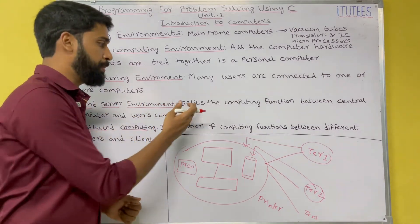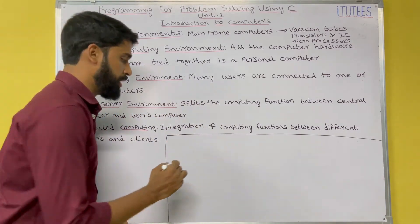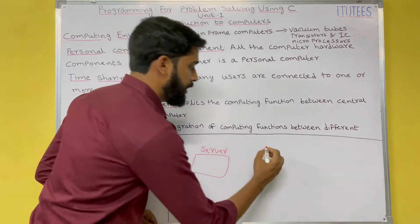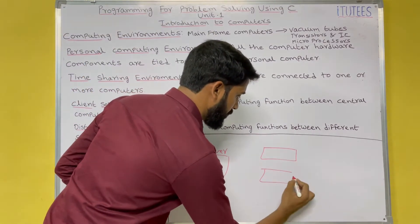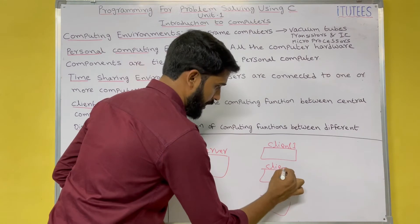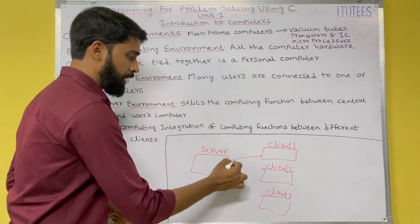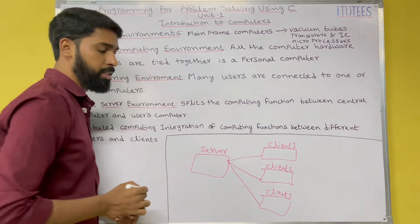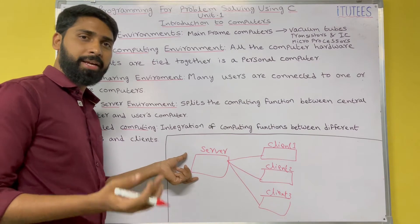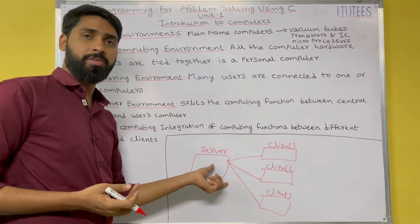Next is the client-server environment. It splits the computing function between a central computer and the user's computers. The central computer is called the server, and the users are called clients — client 1, client 2, and client 3. These clients are connected with the server. The server provides services to the clients, and the client requests services from the server.